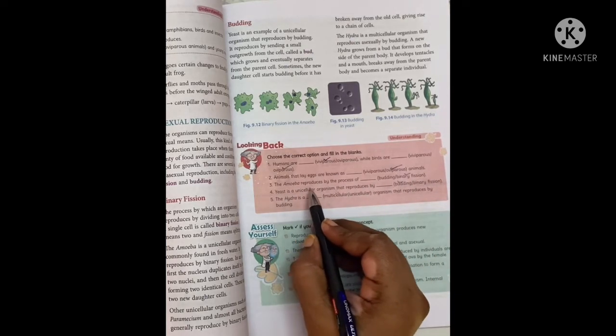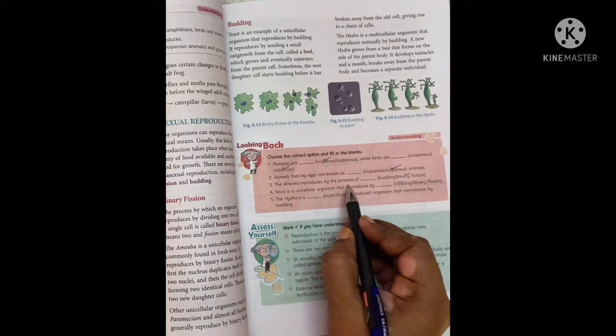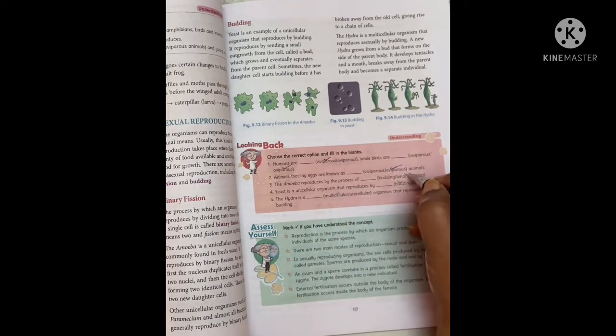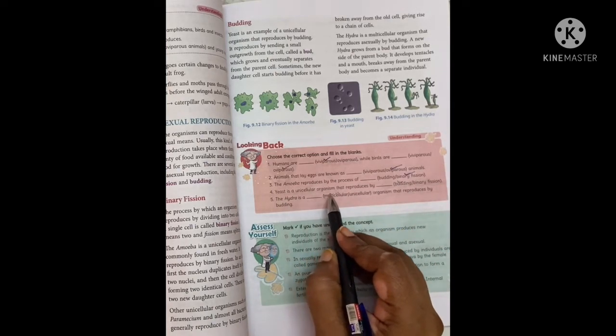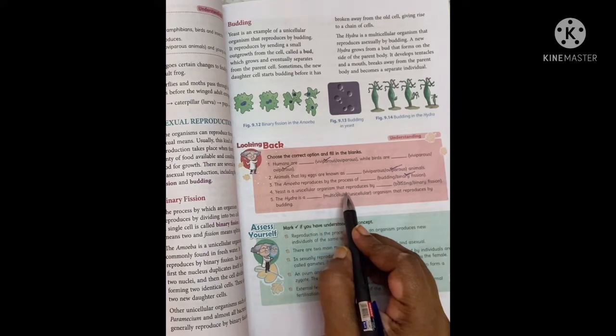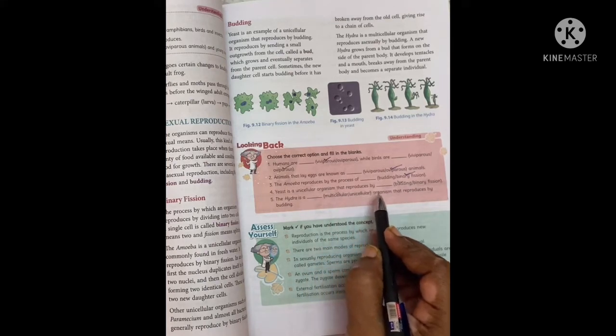The amoeba reproduces by the process of binary fission. Yeast is a unicellular organism that reproduces by budding.